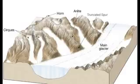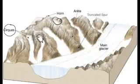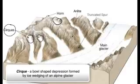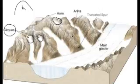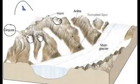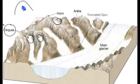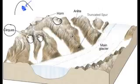Next is the word cirque — C-I-R-Q-U-E. Cirques are bowl-shaped depressions that form because of ice wedging. Picture a rounded mountain with a crack in it — water wiggled its way into that fracture, froze, expanded, and got bigger. This process keeps happening until you have a massive piece of ice embedded into the side of the mountain, eventually creating a bowl-shaped depression: that's a cirque.